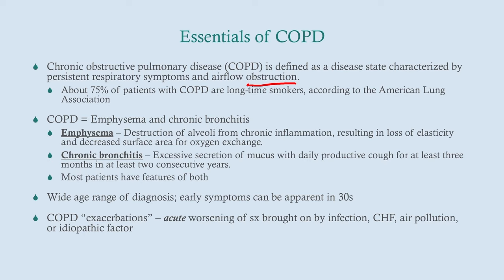That results in a decreased surface area for oxygen exchange — you're probably thinking along the lines of DLCO, which we talked about in our physiology talk. Chronic bronchitis is due to excessive secretion of mucus, resulting in a productive cough, defined as daily for at least three months for at least two years. Most patients with COPD have features of both — this is not a one-or-the-other thing. Most will have some emphysema and some chronic bronchitis, sometimes more of one than the other.